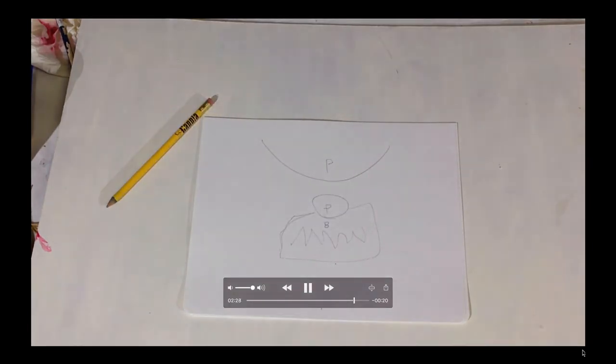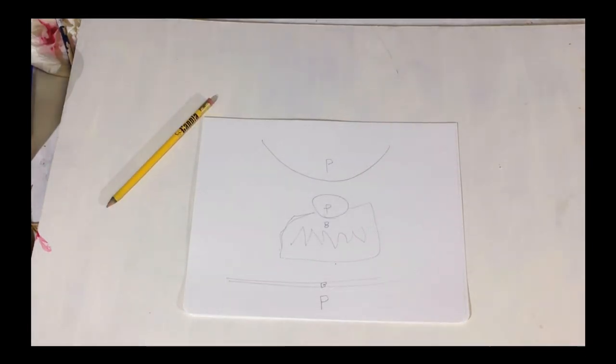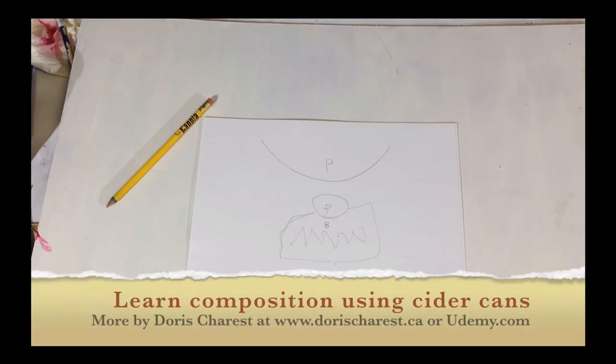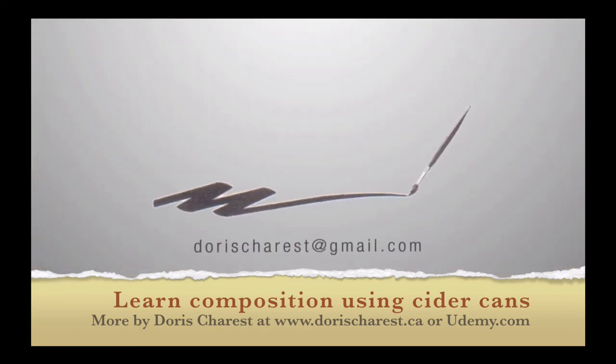So you use the repetition of color, main shape that's light against dark areas. And that's something that we learned from this cider can. So use this in your paintings. We'll see you in the next one.